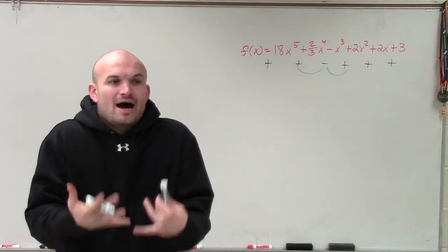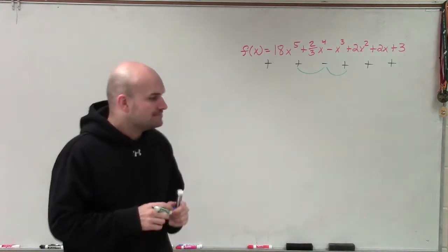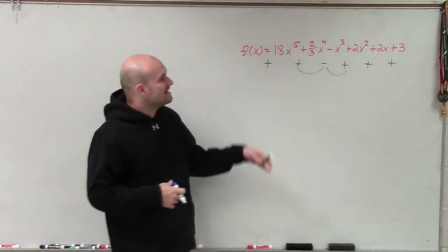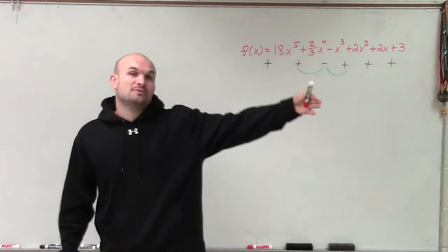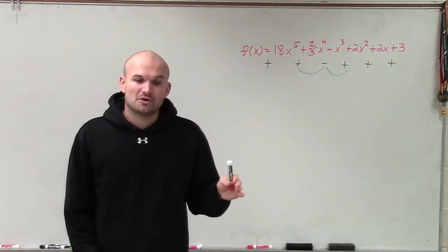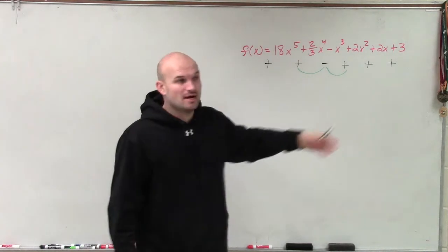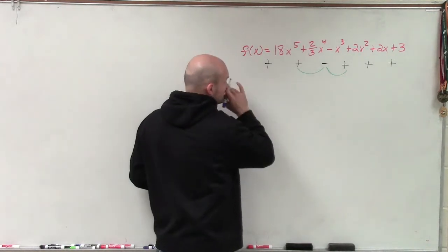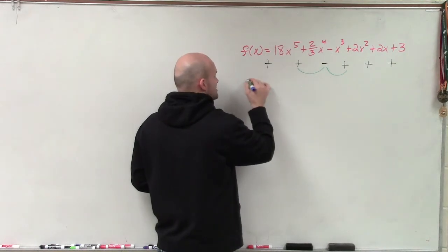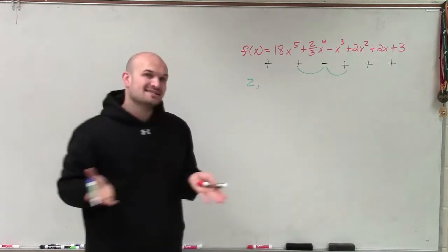So when determining how that's going to help us out, Descartes' rule of signs says that the number of changes in signs between our terms is going to tell us how many possible real zeros we have for the positive minus an even number. So therefore, you can see I have two changes in signs.